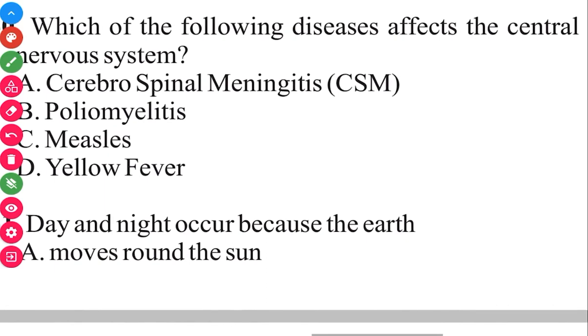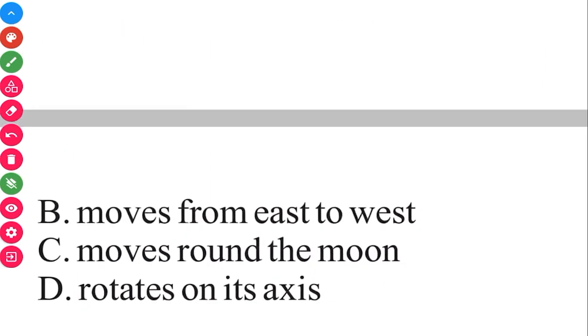Day and night occur because the earth rotates on its axis. The answer in 3, 2, 1 is rotate on its axis.